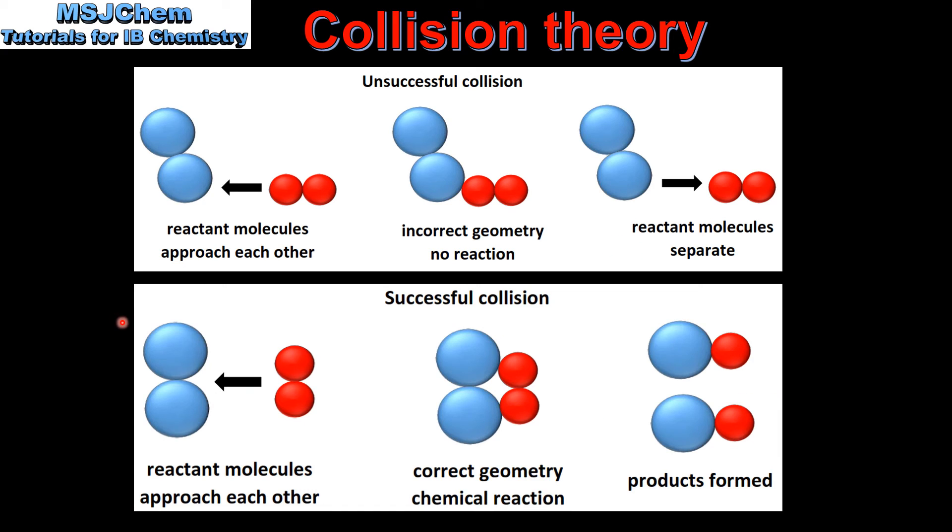Next we look at a successful collision. So once again the reactant molecules approach each other, but this time they collide with the correct geometry, a chemical reaction takes place and the products are formed.